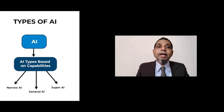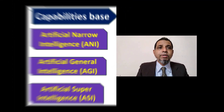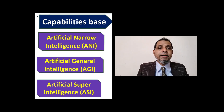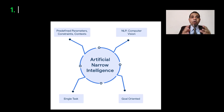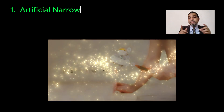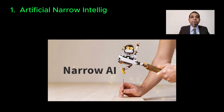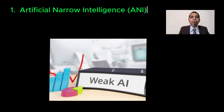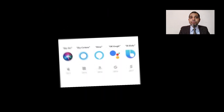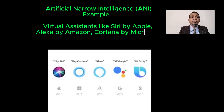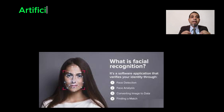Artificial narrow intelligence, or ANI, refers to a computer's ability to perform a single task extremely well. It is the most common and simplest form of AI, also referred to as weak AI, and is used for specific and narrow tasks. Examples of narrow AI include virtual assistants like Siri by Apple, Alexa by Amazon, and Cortana by Microsoft, as well as facial and image recognition software.